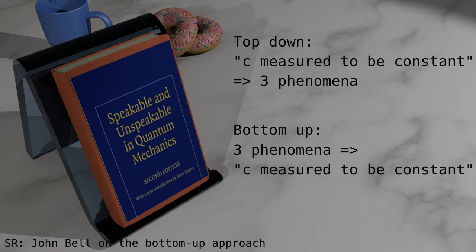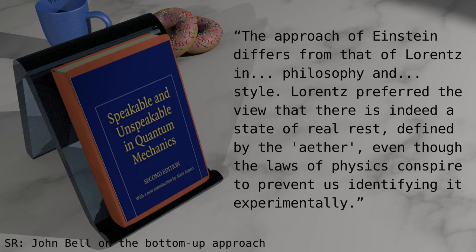In it, he writes, the approach of Einstein differs from that of Lorentz in philosophy and style. Lorentz preferred the view that there is indeed a state of real rest, defined by the ether, even though the laws of physics conspire to prevent us identifying it experimentally. When we get to general relativity and quantum mechanics, we'll come across other conspiracies of nature.